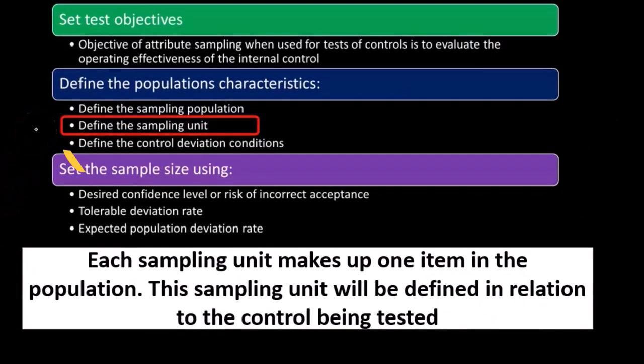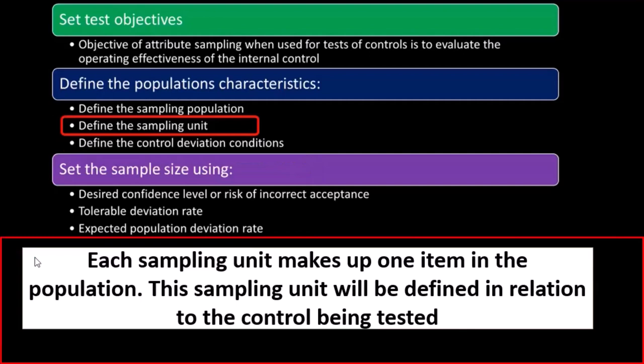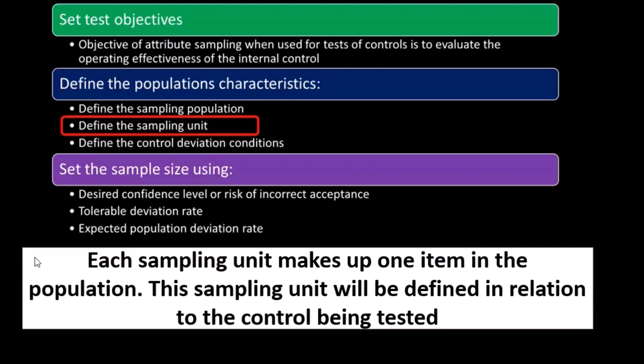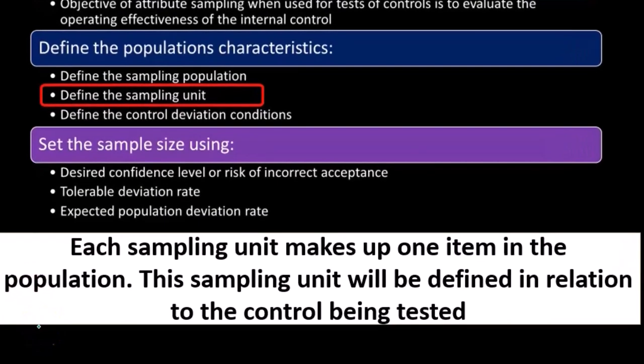To define the sampling unit, each sampling unit makes up one item in the population. So in this case, it would be one of the purchase order documents that we're looking for that would have this indication that it does have the verification on it. This sampling unit will be defined in relation to the control being tested.